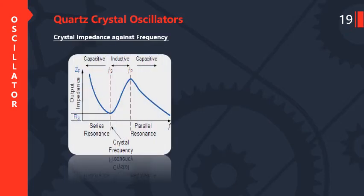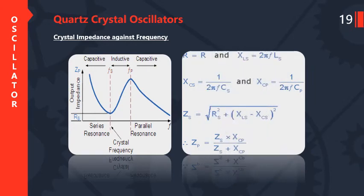Next is the crystal impedance against frequency diagram. This shows the characteristics of the frequency for capacitive, inductive, and resistive loads. R equals R, XLs equals 2πf times Ls, Xcs equals 1 upon 2πf times Cs, and Xcp equals 1 upon 2πf times Cb. The impedance Z equals the square root of R squared plus X squared, where X equals XLs minus Xcs. Finally we get Zp equal to Zs times Xcp divided by Zs plus Xcp.